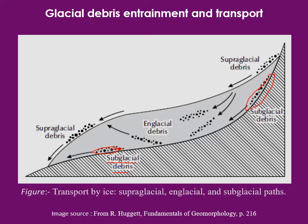The second type is known as supraglacial debris. Here, the fragmented particles basically fall from the side walls of the glacial valley over the glacial mass. The detrital rock fragments fall over the glacial ice mass and move over the top surface along with the ice mass. This type of detrital rock fragments are known as supraglacial debris — when the debris move at the top of the glacial ice mass.